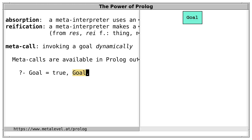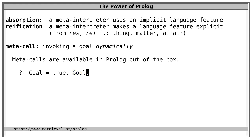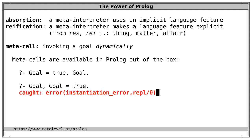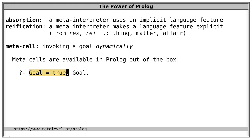A meta-call occurs when a goal is dynamically invoked. This is a built-in feature of Prolog, available out of the box. For example, if you post 'Goal = true, Goal', then statically Goal is a variable. If we post Goal alone, we get an instantiation error because a variable is insufficiently instantiated to work as a goal. But in this example, the first goal unifies Goal with the atom true, so at the time Goal is invoked, it's already instantiated, and the query succeeds.